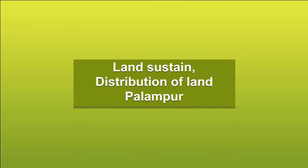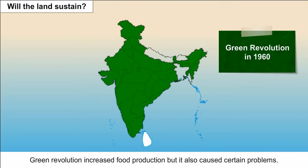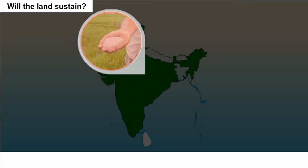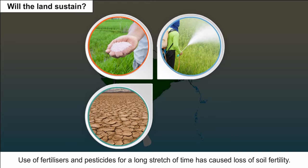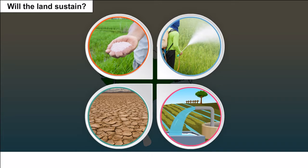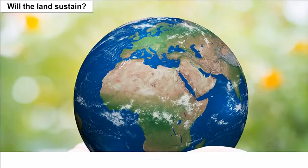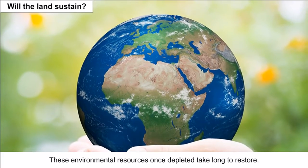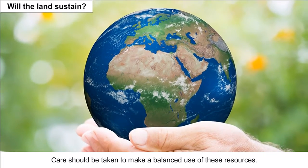Will the land sustain? The Green Revolution increased food production but also caused certain problems. Use of fertilizers and pesticides over a long stretch of time has caused loss of soil fertility. Drawing groundwater for tube well irrigation has reduced the water table below the ground. These environmental resources, once depleted, take long to restore. Care should be taken to make balanced use of these resources.